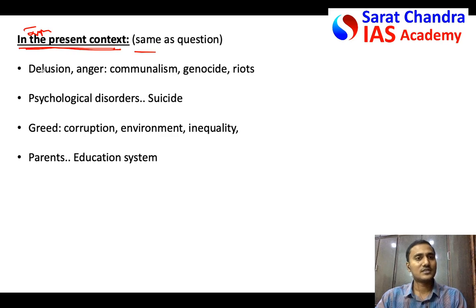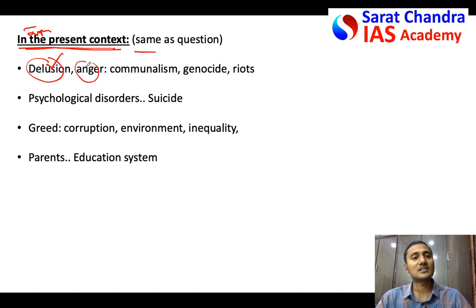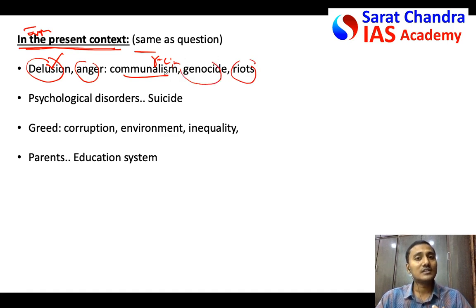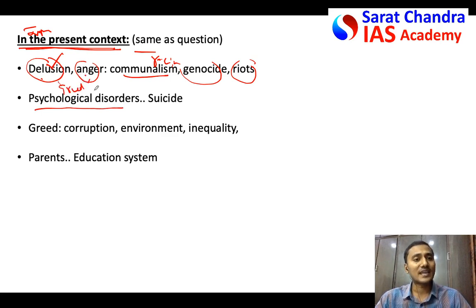In the present days, how is this quotation relevant? Because of the delusion that our religion, caste, or race is the greatest, people get anger toward other religions, castes, and races — leading to racism, communalism, mob violence, riots, genocide, and ethnic conflict. All these things are happening today because of delusion and anger. Even psychological disorders are coming because of greed — the greed to achieve something beyond what you can. With that greed, several youth try to succeed in various fields, and when they cannot, some commit suicide or develop anxiety and stress.